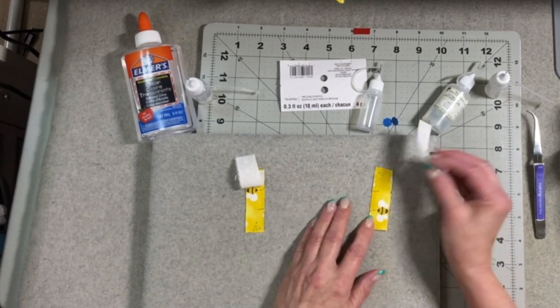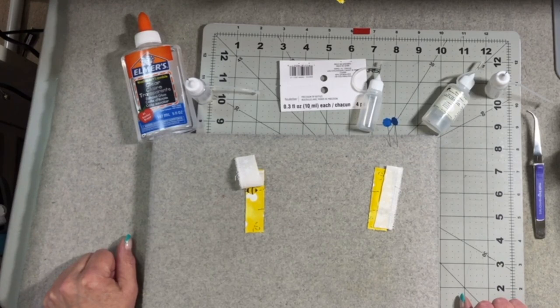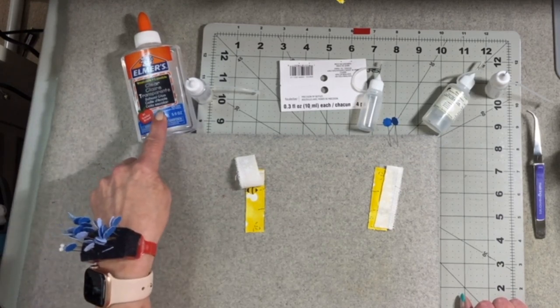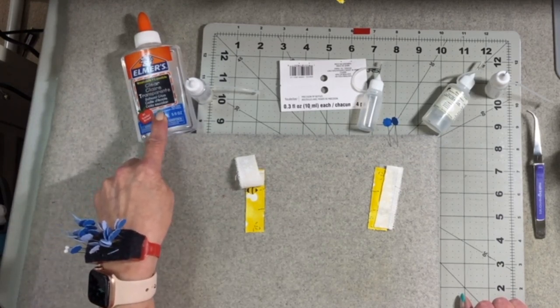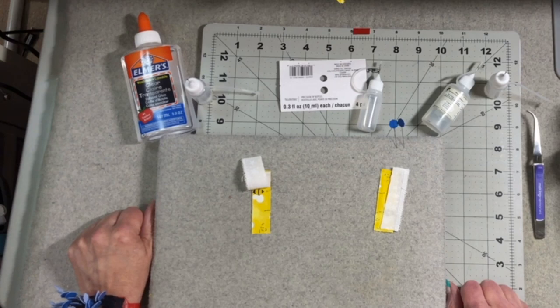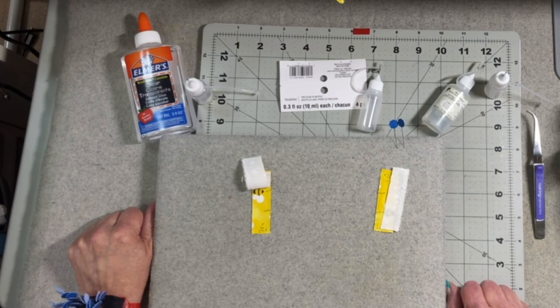After testing both products I feel the Elmer's School Glue did perform just as well as the Acorn Seam Align Glue. Give this a try when you get around to it and let me know what you think. Thanks for watching.